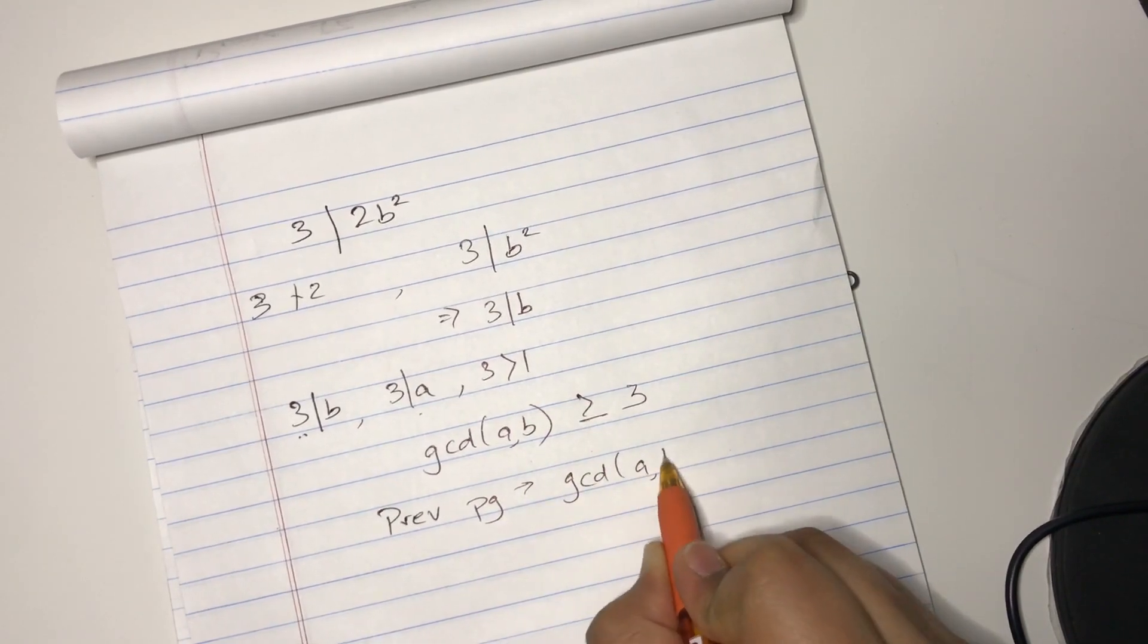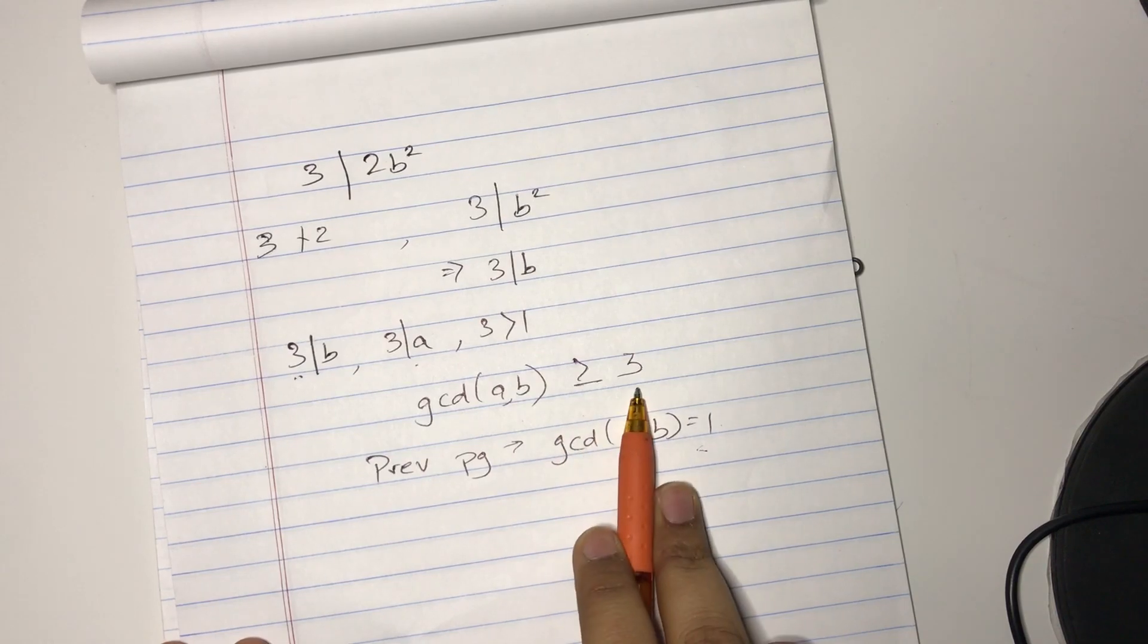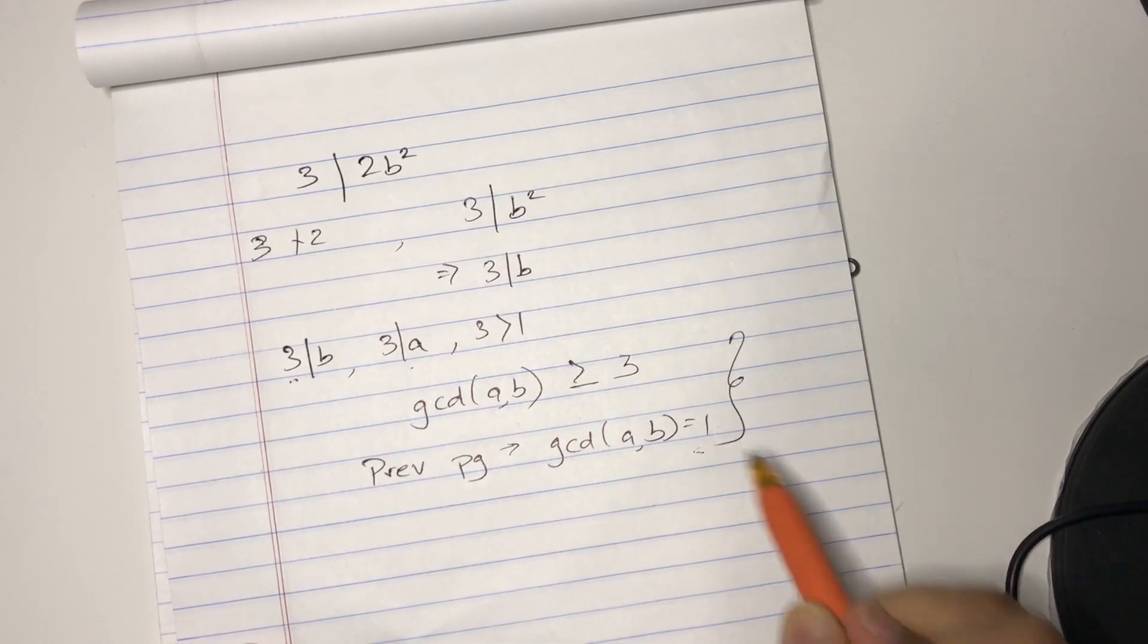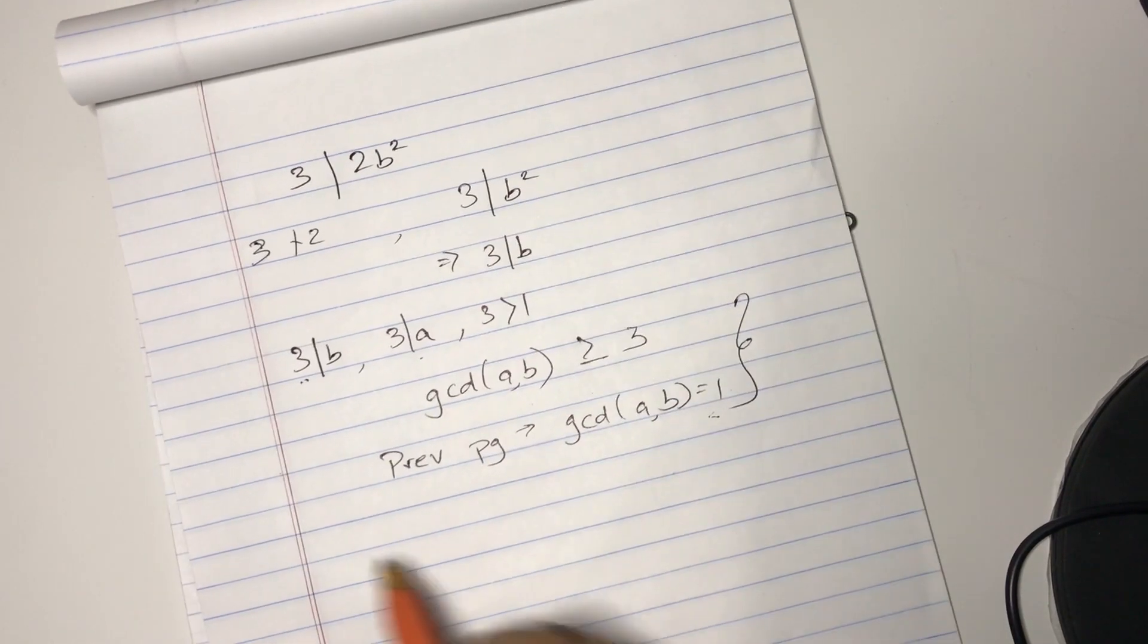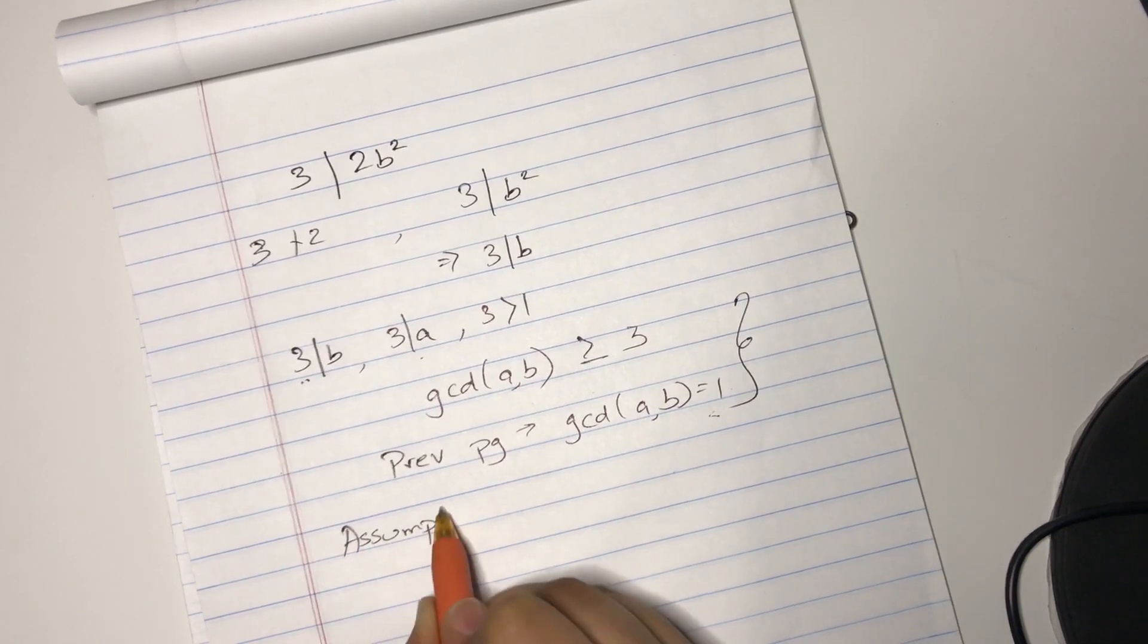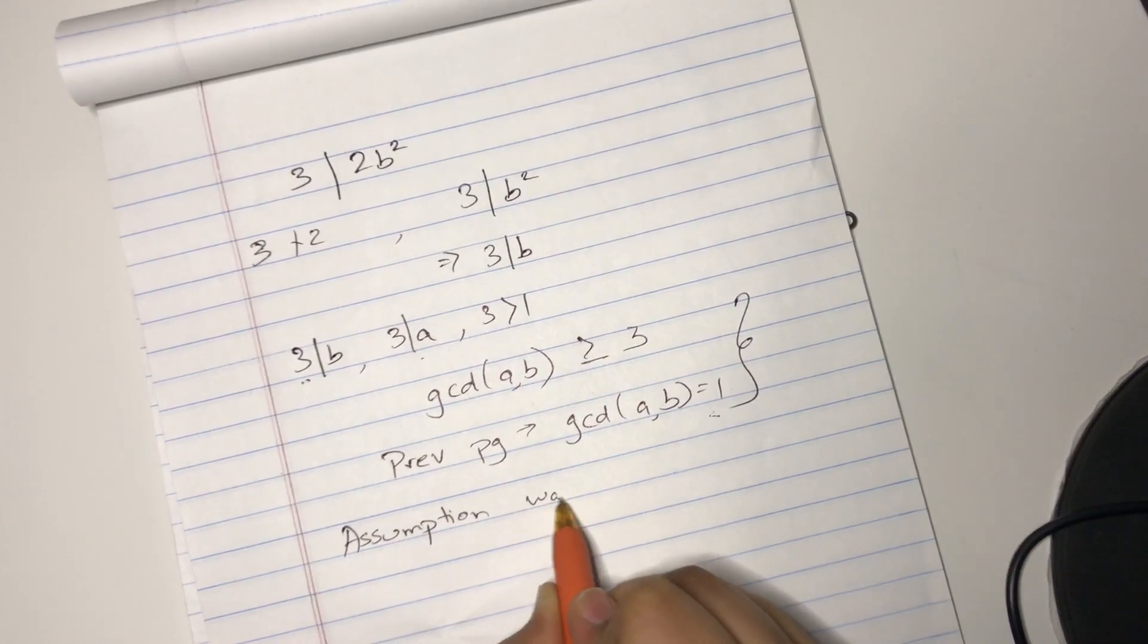GCD of A and B equals 1. But, you know, 1 is not greater than or equal to 3. So these two things are a contradiction. So our assumption was false.